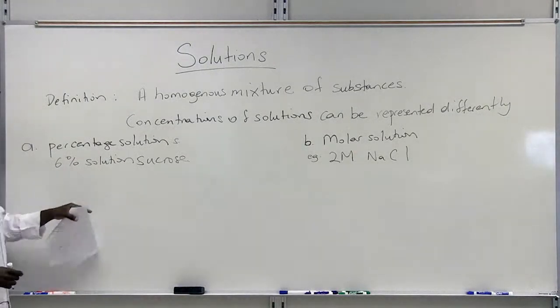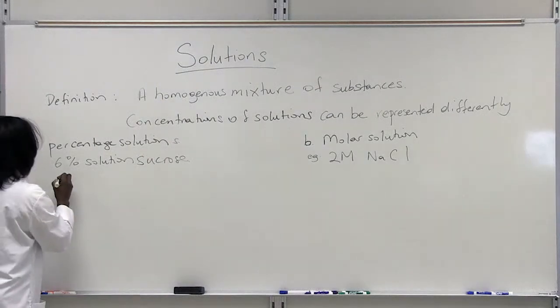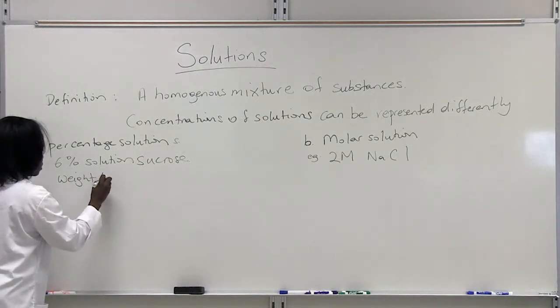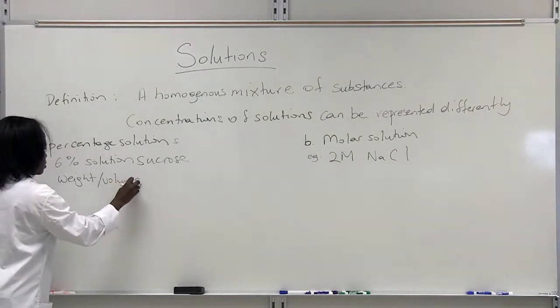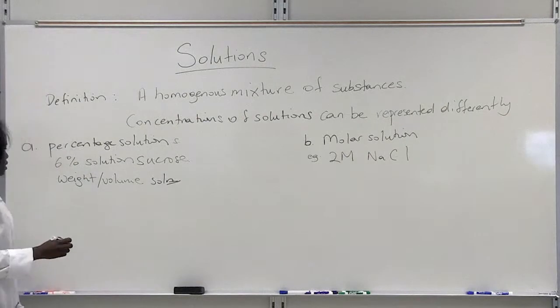We call this type of percentage solution a weight per volume solution. That means if you're going to make up a 6% sucrose solution, if you're making 100 mils of this solution, it means that you're going to dissolve 6 grams of sucrose.